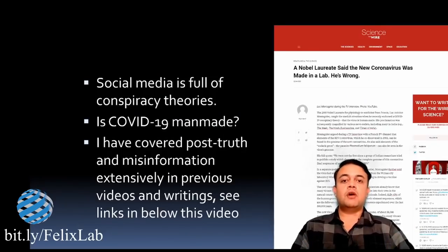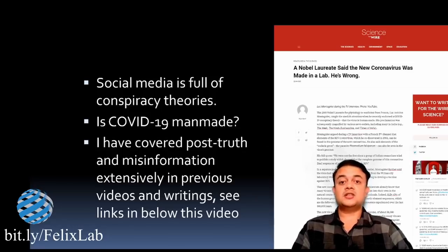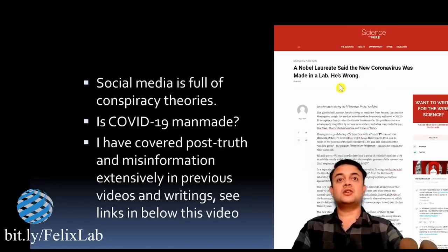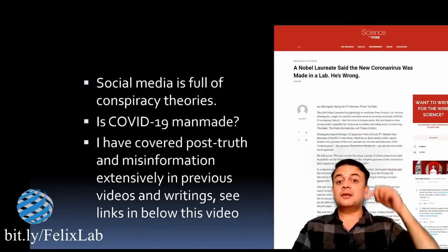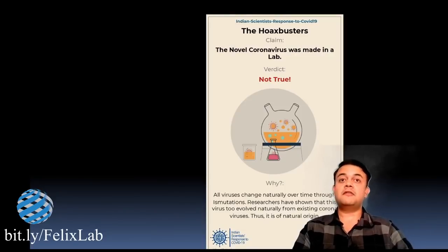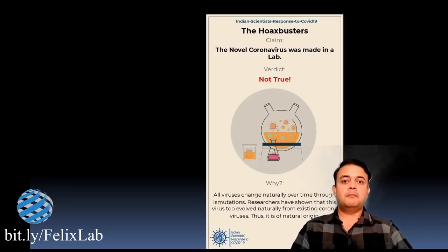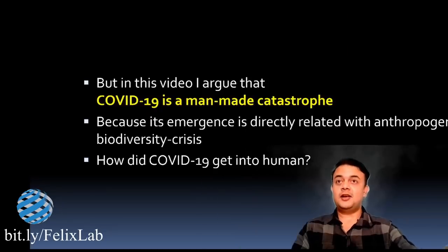A well-known conspiracy theory flooding social media is that COVID-19 is a man-made disaster. I have covered this misinformation extensively in previous videos and writings — for example, in an article published in ScienceWire addressing the claim by Nobel laureate Luc Montagnier that the virus was made in a lab. He is wrong. I am also working with Inside COVID, an Indian scientists' response initiative that has busted many myths, including the claim that the novel coronavirus was made in a lab. Science has proven it came from wild animals.